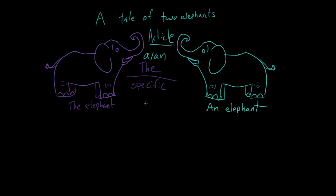Are you thinking about any old elephant when you talk about an elephant? Or are you thinking about one elephant in particular — the elephant? When we're talking about the elephant, we're thinking about a specific elephant. We have a particular one in mind. This is what's called the definite.